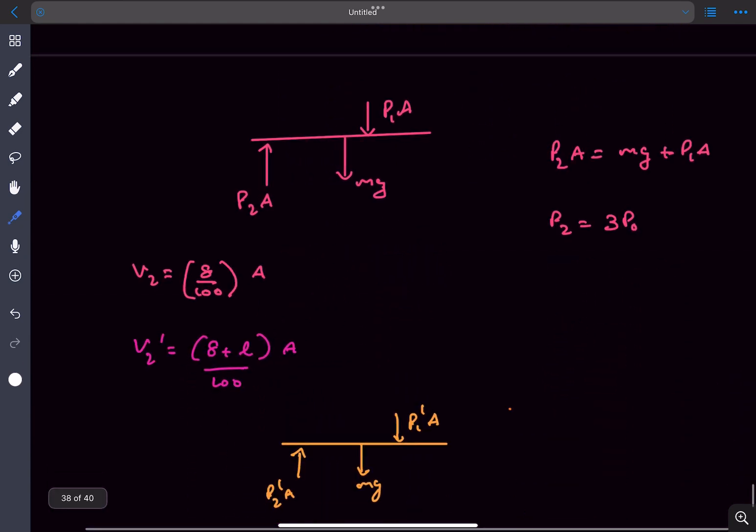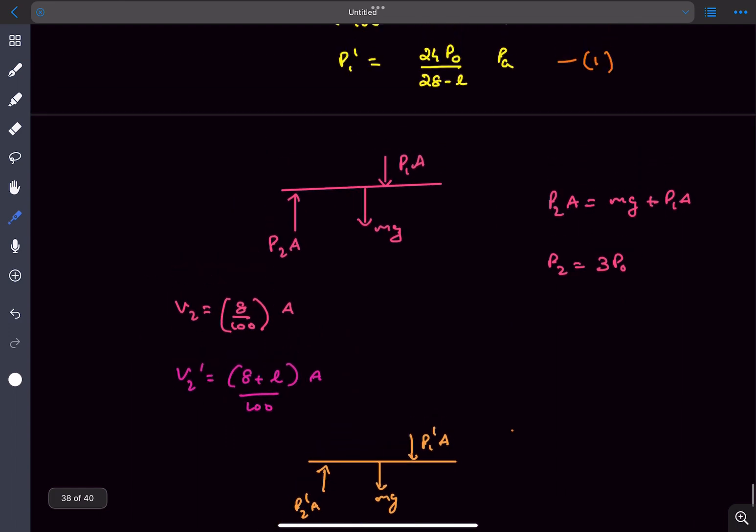Now drawing the FBD of the second piston in the initial state, the gas in the upper chamber applies a force of P1 times A. The initial pressure in the bottom chamber is P2, so it applies a force of P2 times A, and the weight acts in the downward direction. Balancing the forces, the value of P2 is 3P0.